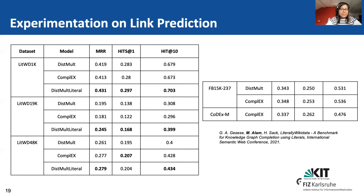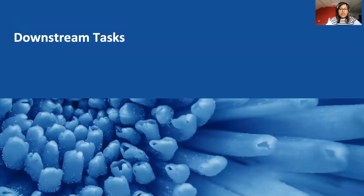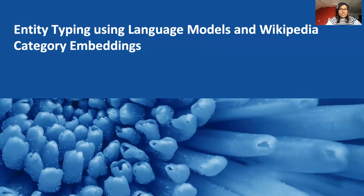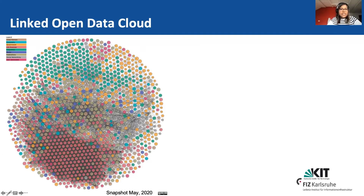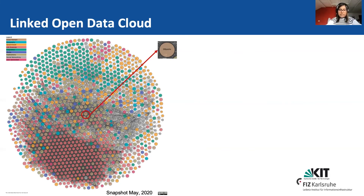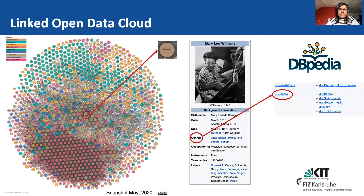Now I'll discuss some downstream tasks. First is entity typing, where we use language models and Wikipedia category embeddings. I go back to the Linked Open Data Cloud — there are many domains covered here, including DBpedia. DBpedia is cross-domain and almost all datasets are connected to it. DBpedia is actually generated from the infoboxes of Wikipedia. You can see the genre information on DBpedia, but since it is automatically extracted from infoboxes, we have some incomplete information.